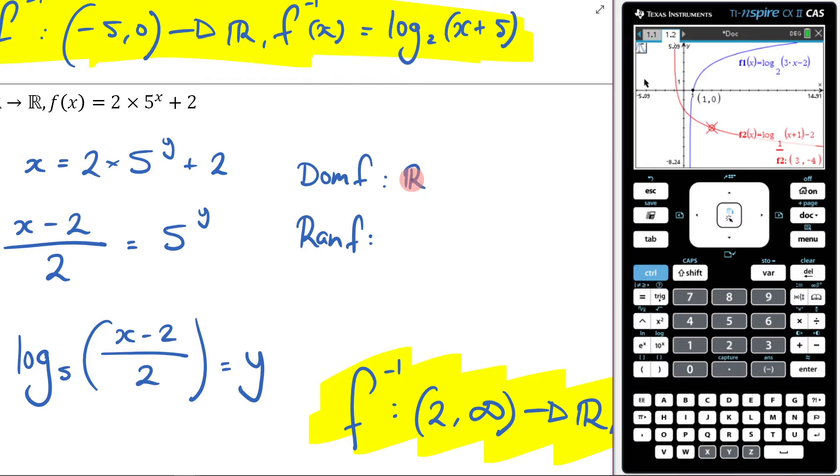It's just going to be all real numbers, because as you can see, what I'm dealing with here is shifted 2 up. It's got some sort of dilation happening here, but we really don't care about that. It's just going to look like that.